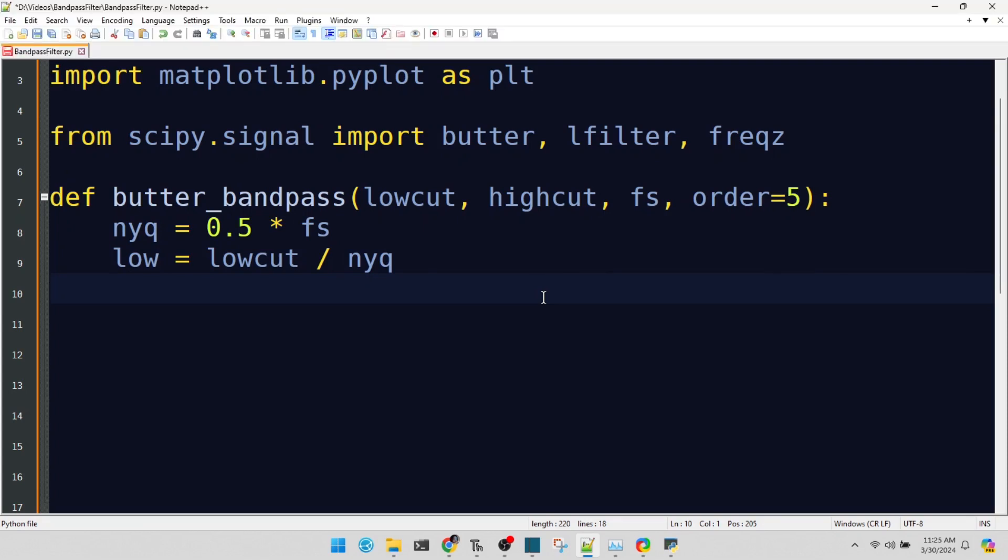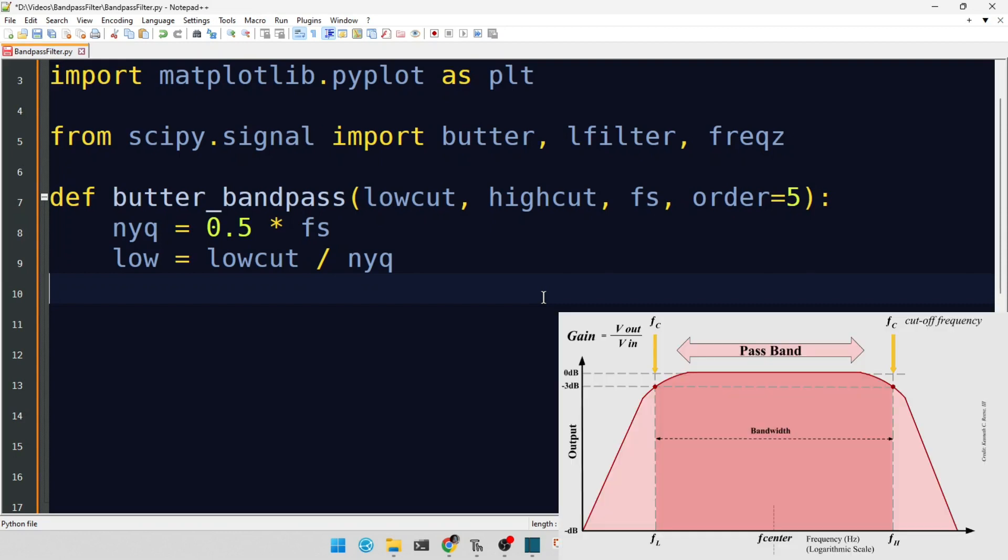Calling the Butter function, we create our bandpass filter coefficients. The band type specifies that we want a bandpass filter.